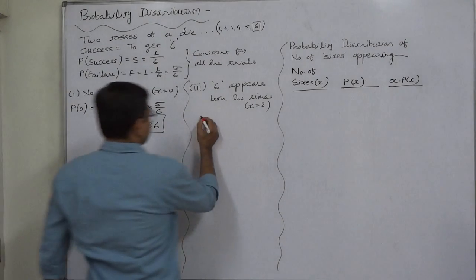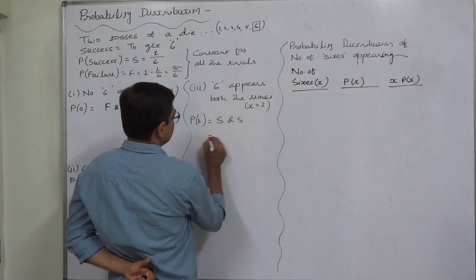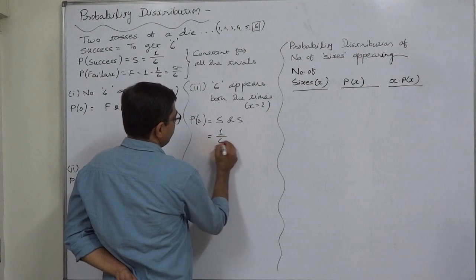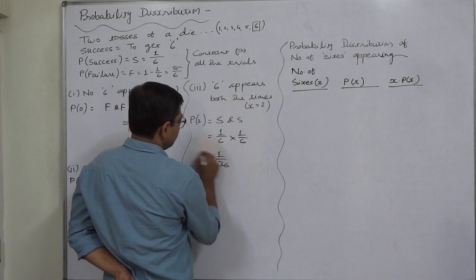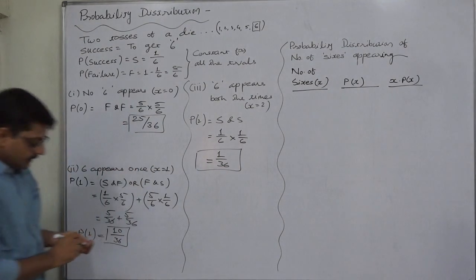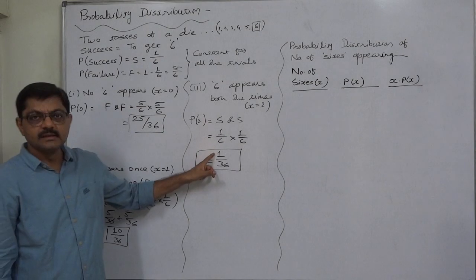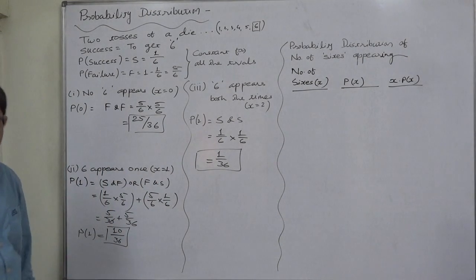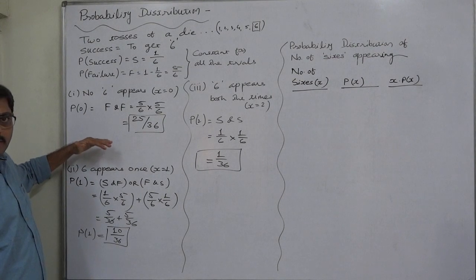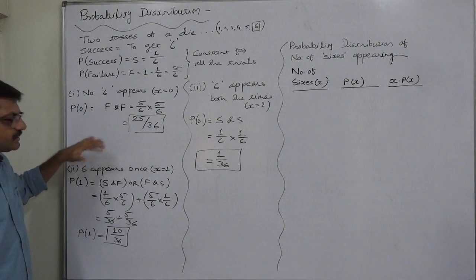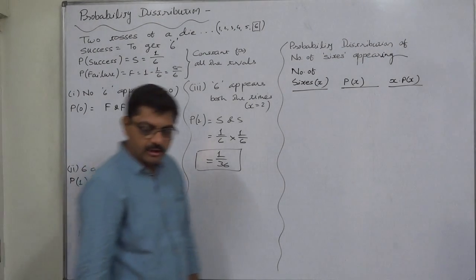P(X=2): six appears two times — success in the first trial and success in the second — so one by six times one by six equals one by thirty-six. Verification: twenty-five plus ten plus one equals thirty-six, so thirty-six by thirty-six equals one. The three outcomes are indeed mutually exclusive and exhaustive.